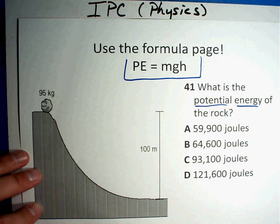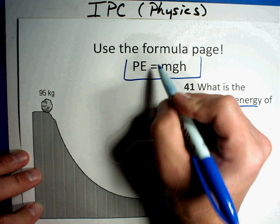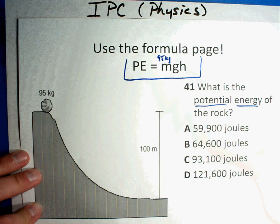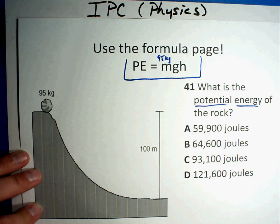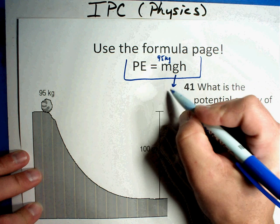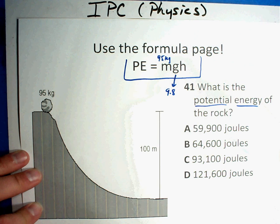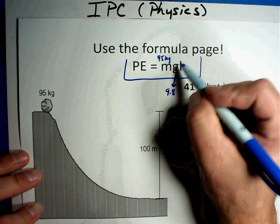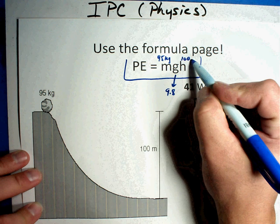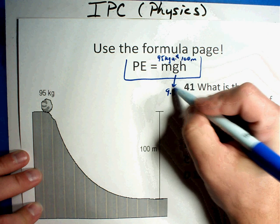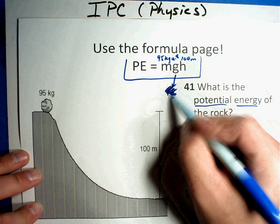So, we'll just plug our numbers in right there. Potential energy equals mass. What is the mass of the rock? Well, it says right there it's 95 kilograms. So, we're going to write 95 kilograms right there. G stands for gravity, and that's, I'm going to write it below it for a second because I ran out of room, 9.8. And the height, how high is it? 100 meters. So, we're going to take all three of those numbers. Let me see if I can put that 9.8 in here so it works. That'll work.